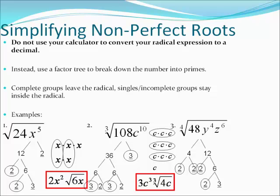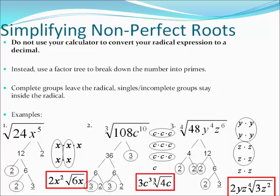With your y's and your z's, we have one group of y's and one group of z's. They're going to come out in front with the two. And then your three and two z's are left over inside. So two y, z to the first power — the fourth root of 3z² is left over.